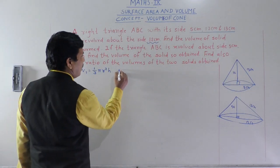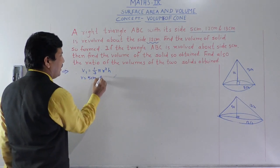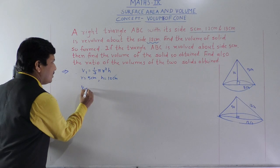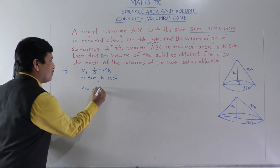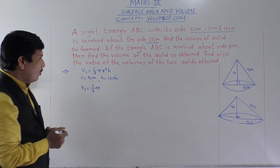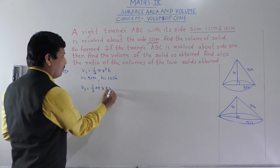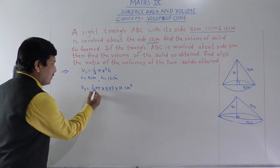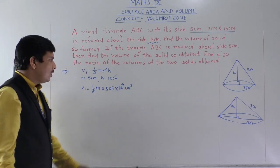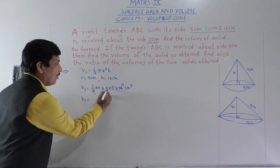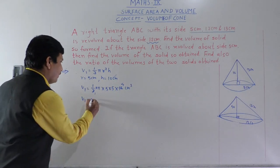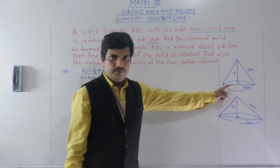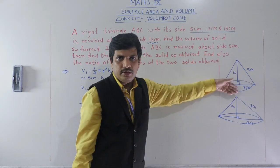So V1 = (1/3) × π × 5 × 5 × 12. Since we have to find the ratio, we will keep π as it is — it will be cancelled later. Here 3 divides into 12 giving 4, and 5² = 25, so V1 = 100π cm³. This is the volume of the first cone, revolved about the side 12 cm.